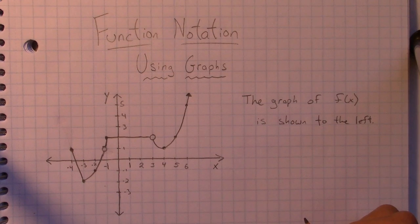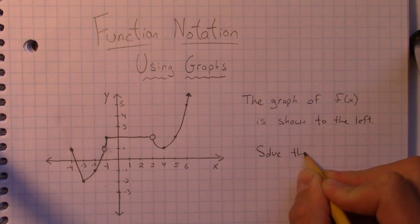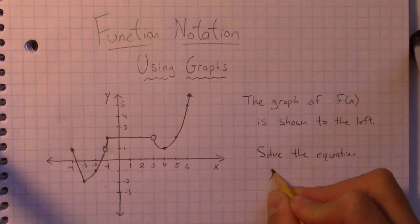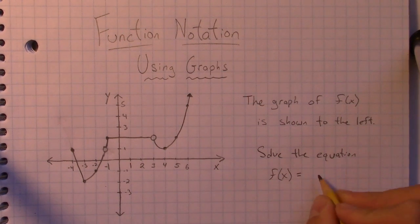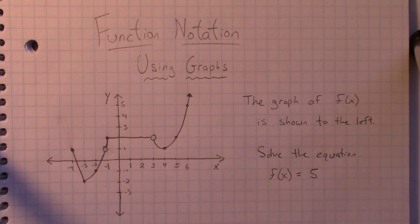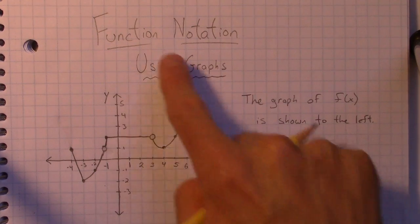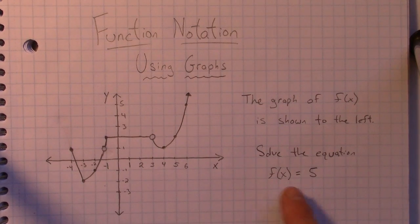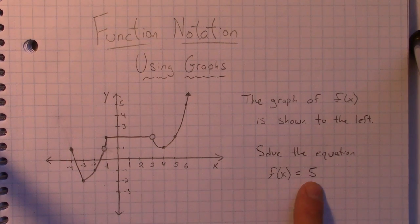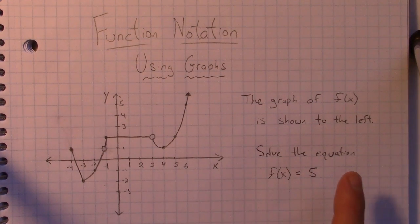But what you might see is a problem that says something like solve the equation f(x) equals 5. Now you might not even see the word solve the equation. You might see it might be more wordy than this, might be less wordy than this, but this is what we're focused on. f(x) equals 5. So it's function notation right here, right? And the words that this f(x) is actually saying is for what values of x is this true?